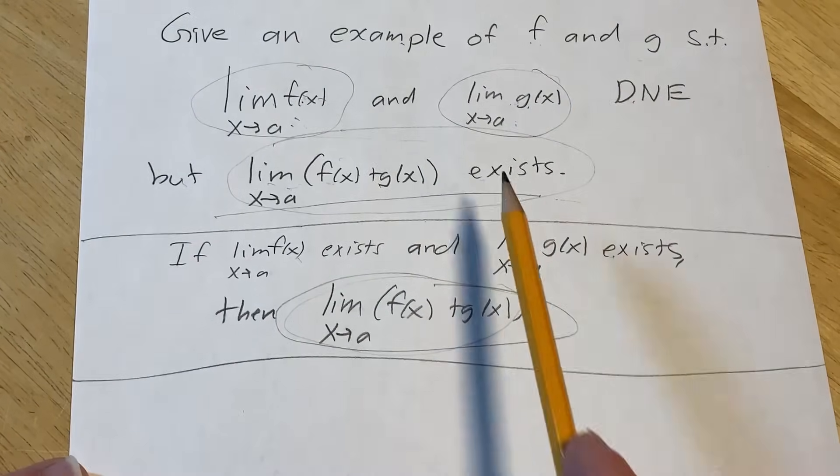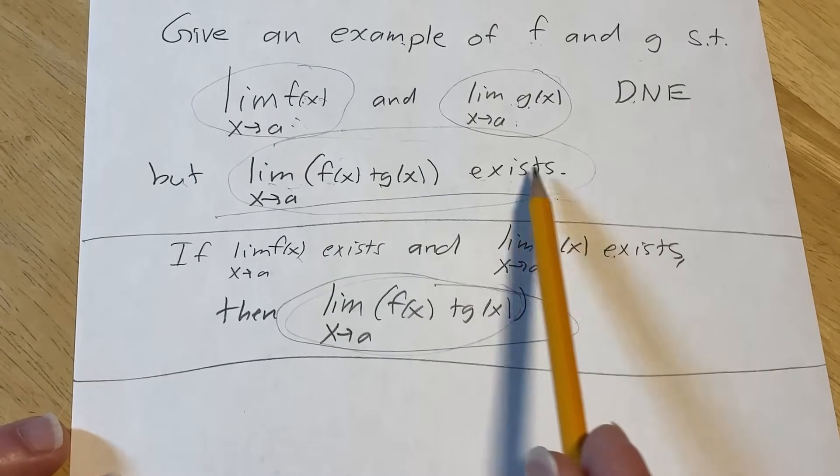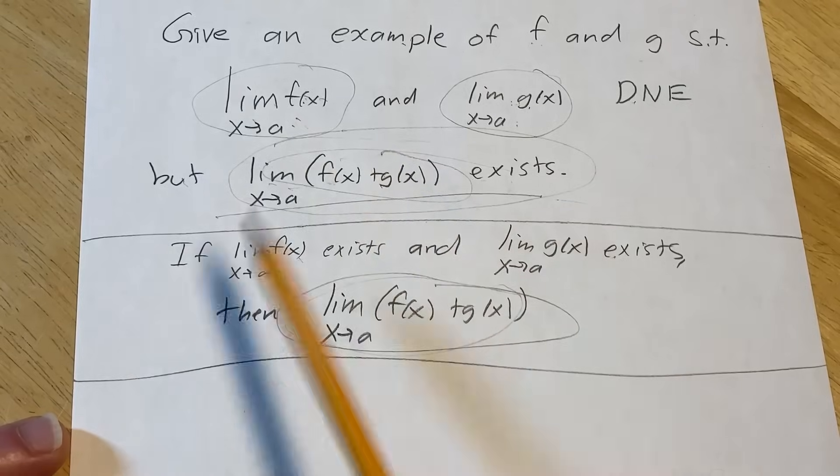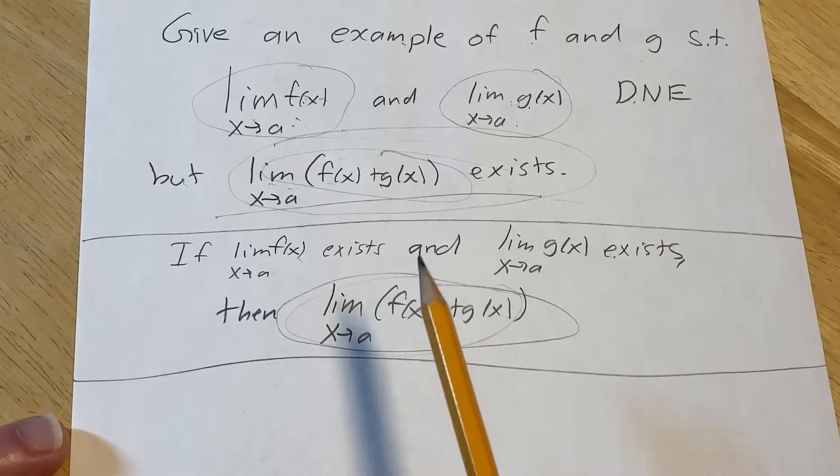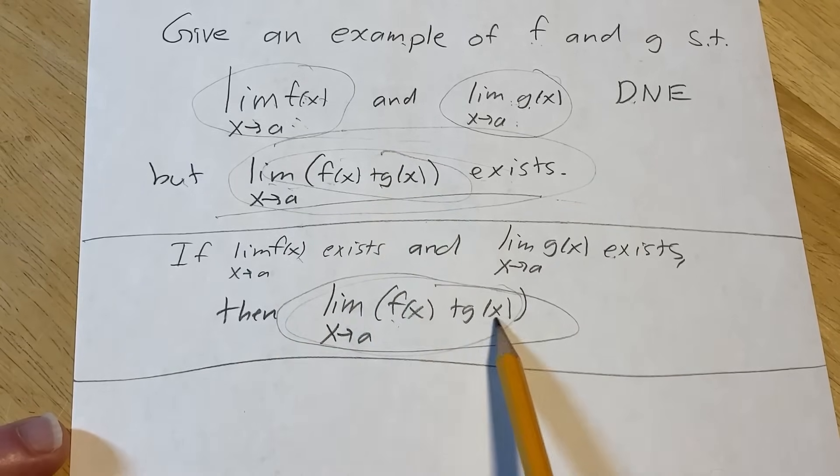It wants two functions so that you can show that you have the sum existing, but not the individual limits. Basically, that means that you're not allowed to break it apart.